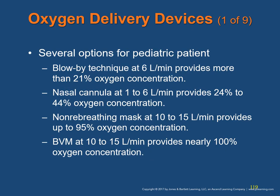Oxygen Delivery Devices. Options for delivering supplemental oxygen to infants and children include: blow-by technique at 6 liters per minute providing more than 21% oxygen concentration; nasal cannula at 1 to 6 liters providing 24 to 40% oxygen; non-rebreather mask at 10 to 15 liters providing 95% oxygen concentration; and BVM with oxygen reservoir at 10 to 15 liters providing nearly 100% oxygen concentration. Use of a non-rebreather mask, nasal cannula, or simple face mask is indicated only for patients with adequate respirations and tidal volumes. Children with fewer than 12 or more than 60 breaths per minute, altered level of consciousness, or inadequate tidal volume should receive assisted ventilations with a BVM.